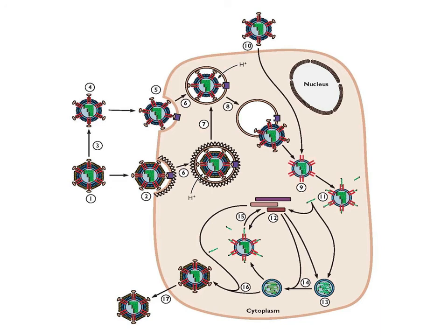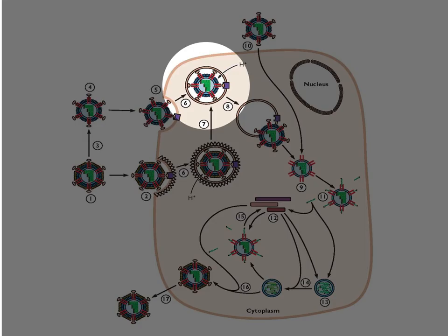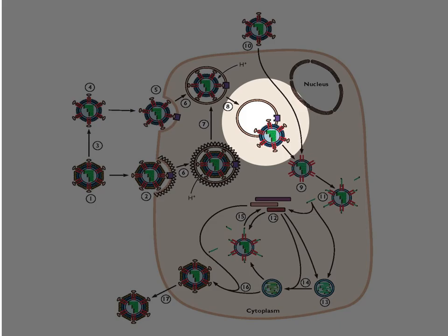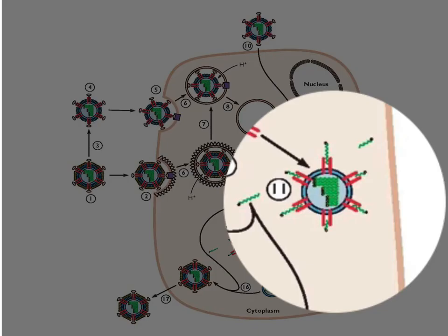Here is an infecting reovirus. It gets taken into the cell by endocytosis. As the endosome fuses with lysosomes, the outer shell is digested away, and eventually that hydrophobic particle gets out of the endosome into the cytoplasm. It still has its double-stranded RNAs inside — you can see the green segments — and mRNA synthesis begins, because it has the enzyme in the particle.